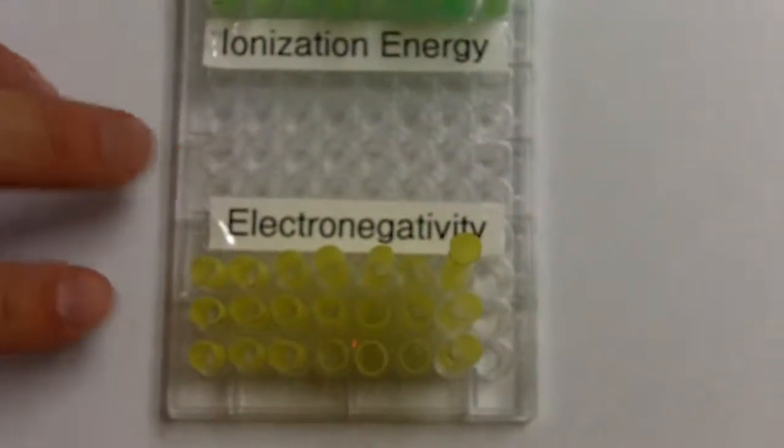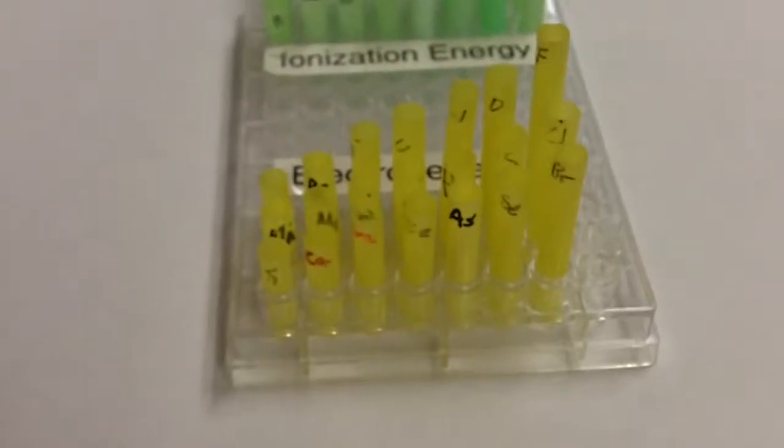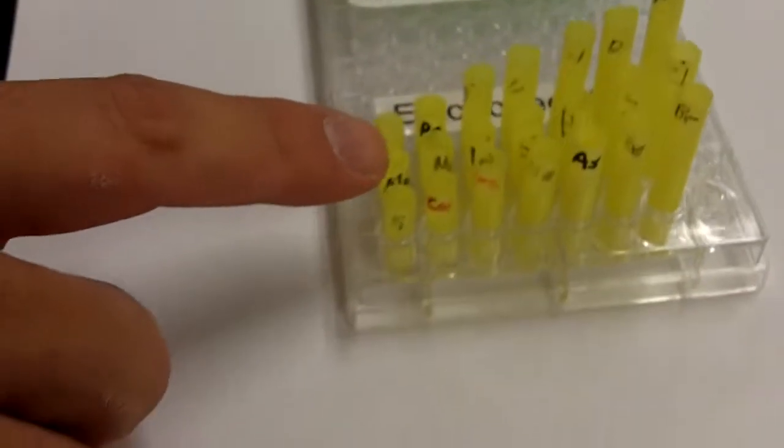And then electronegativity, you see a very similar pattern. Electronegativity, remember, is the ability of an atom to attract an electron. And what we see here with the alkali metals is that that ability is very low.